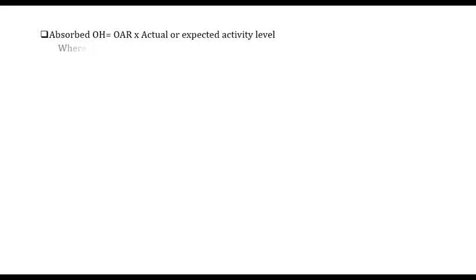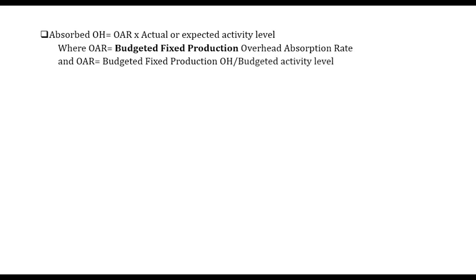Absorbed overheads equal the overhead absorption rate (OAR) multiplied by the actual or expected activity level. The activity level could be hours, units, etc. — it depends on the situation. The overhead absorption rate equals budgeted fixed production overheads divided by the budgeted activity level. The budgeted activity level can sometimes be given as the normal activity level, so don't be confused by the terms.